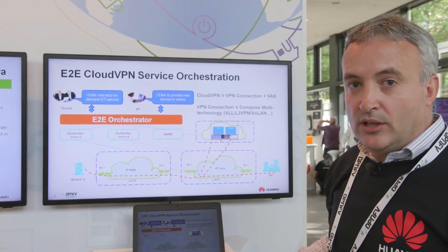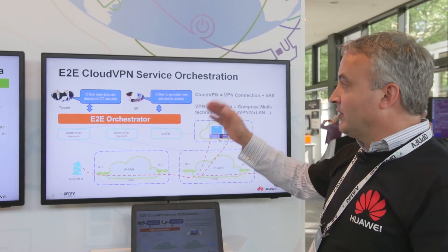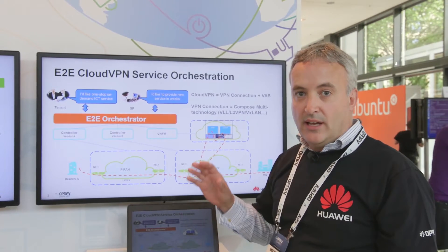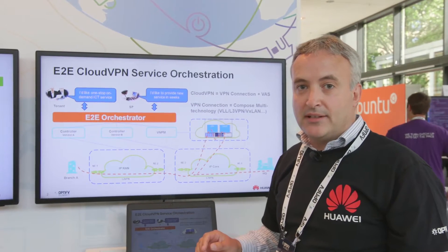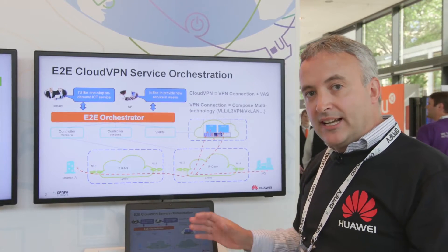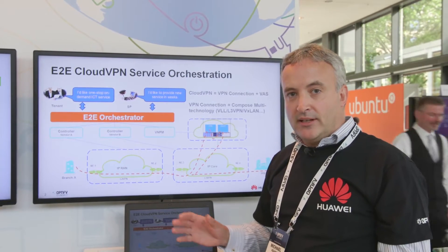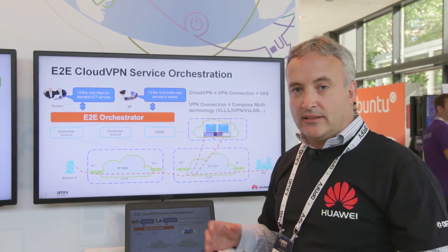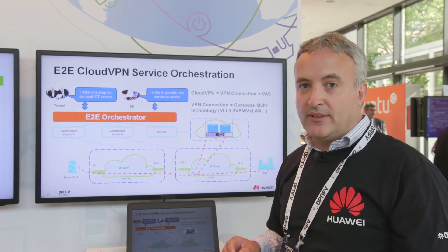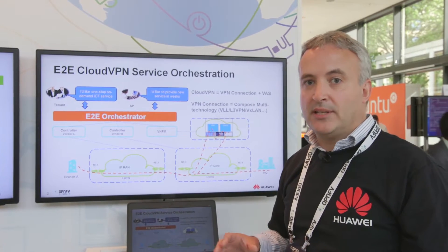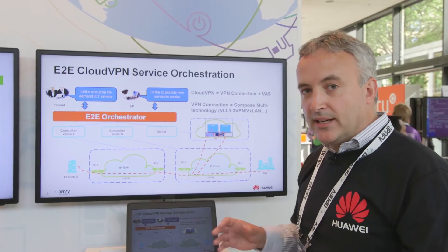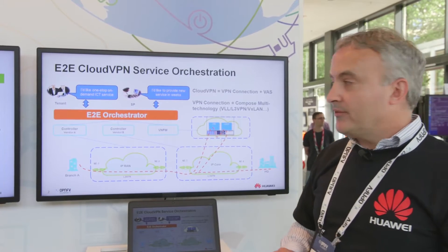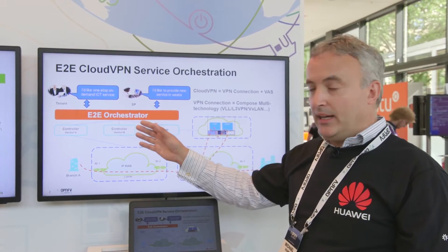The first thing we're looking at is end-to-end cloud VPN service orchestration. The idea is to create a very agile environment where we can have very dynamic and on-demand services for cloud VPN. The idea is that I can connect all of my corporate sites via a VPN service and then deploy new value-added services over that VPN to the corporate sites — all done in a matter of minutes and seconds, with the ability to add and remove value-added services. The orchestrator is a key enabler for this.